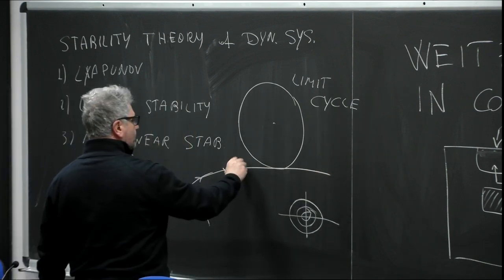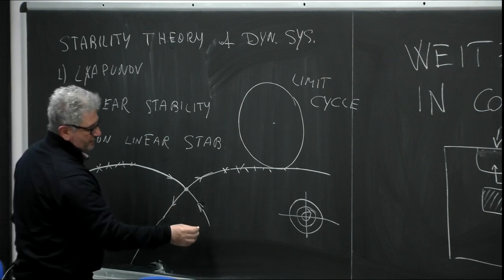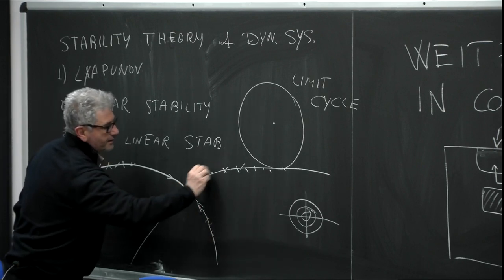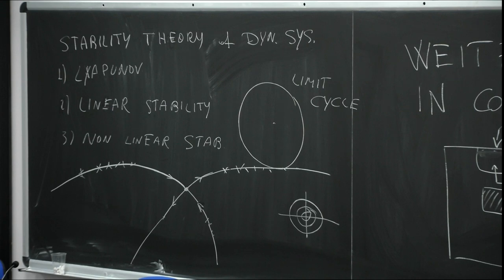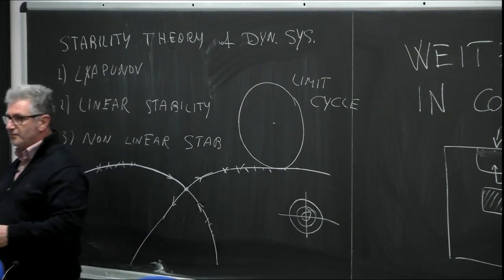For a saddle you can have two stable manifolds and two unstable manifolds. The unstable manifolds are running away from the fixed point. They are invariant sets, so if you stay on a manifold you remain on that set forever — it's like a prison: you can move along it but you remain on that set.